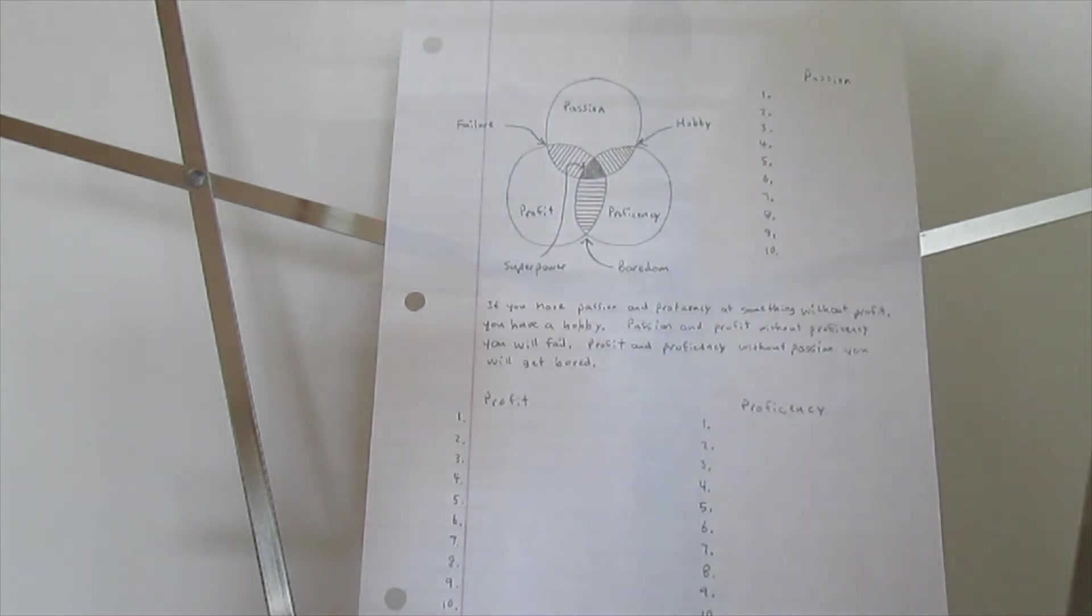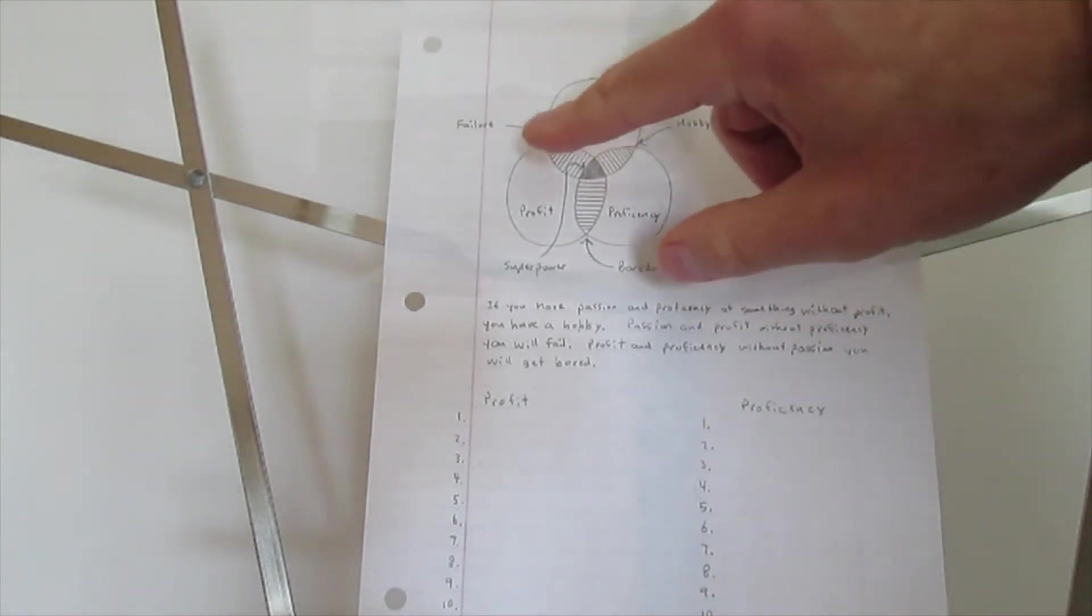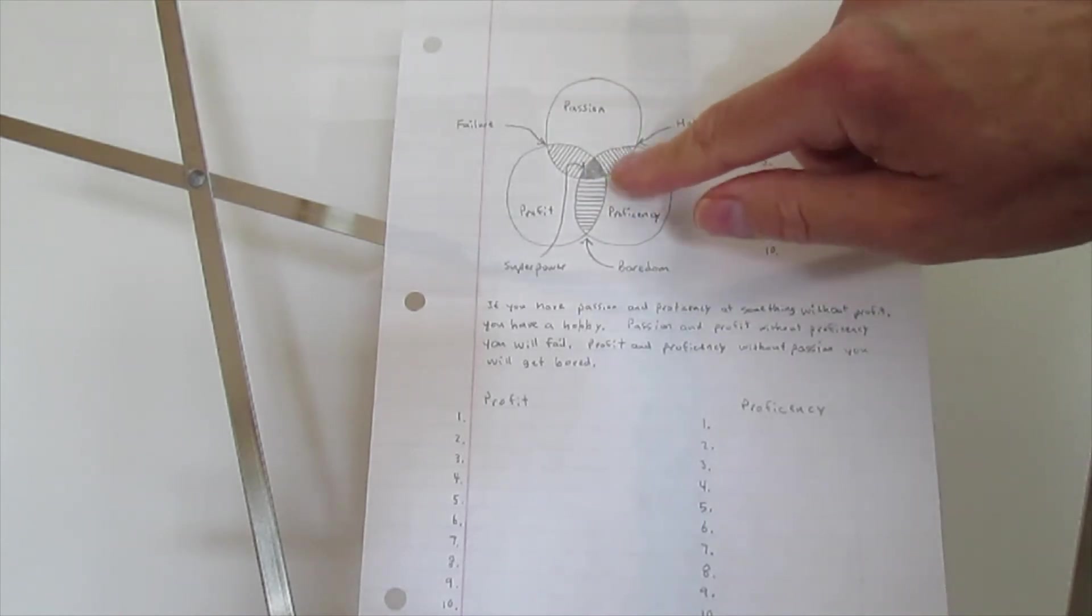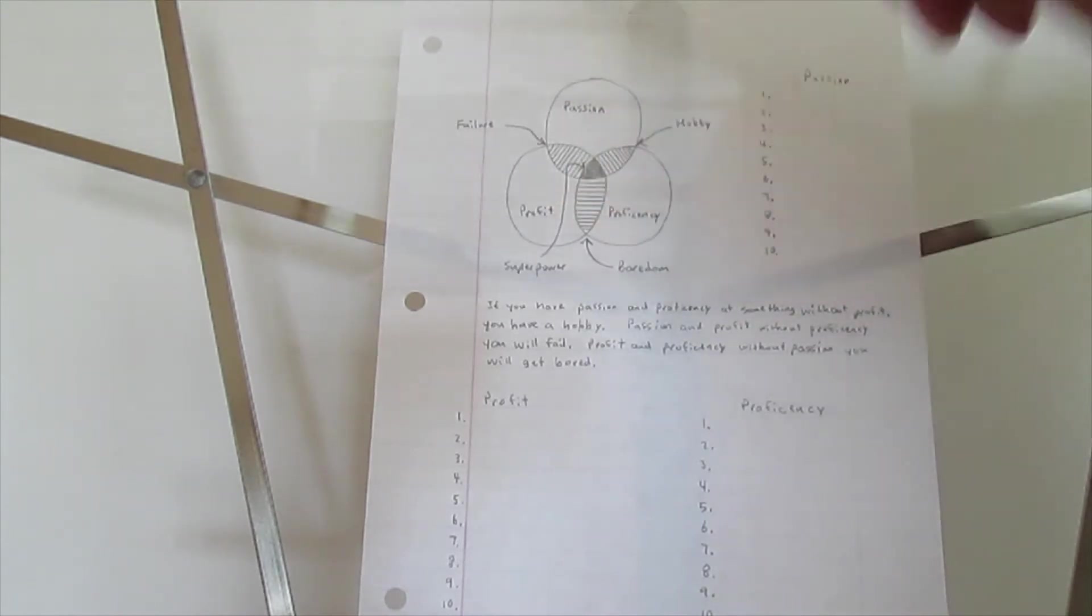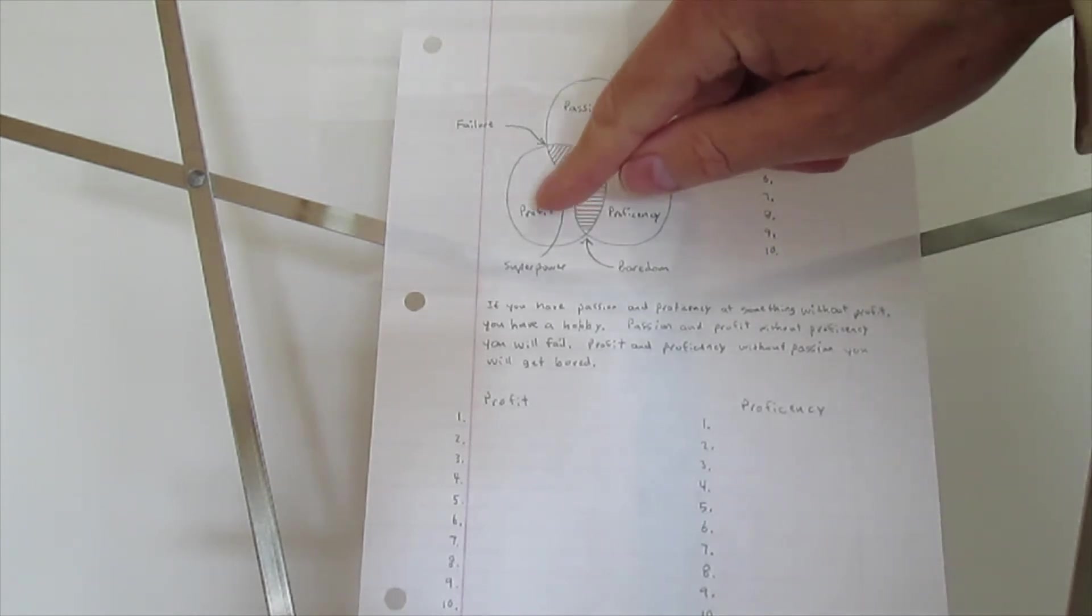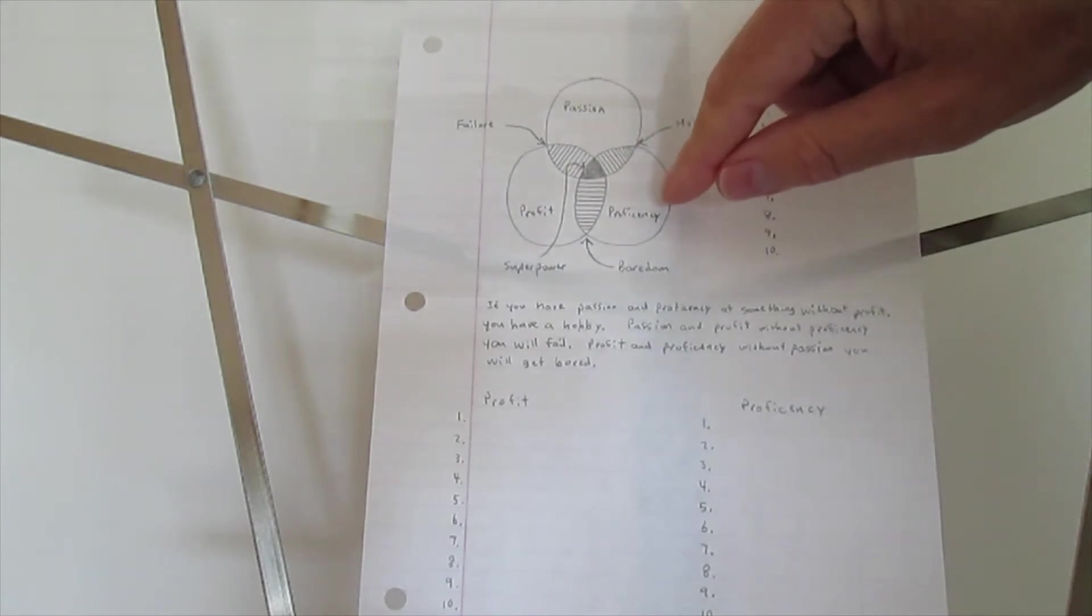This is a way to find your dream job and your superpower. Draw three circles and they all overlap in the middle. They also overlap between each of these circles. This top circle is what are you passionate about, here is what can you profit doing, and here is proficiency or what are you good at doing.